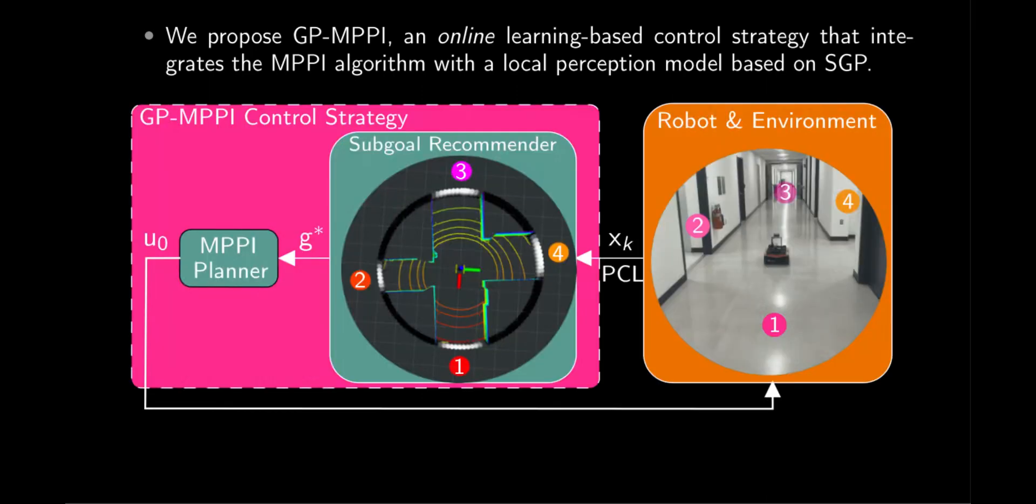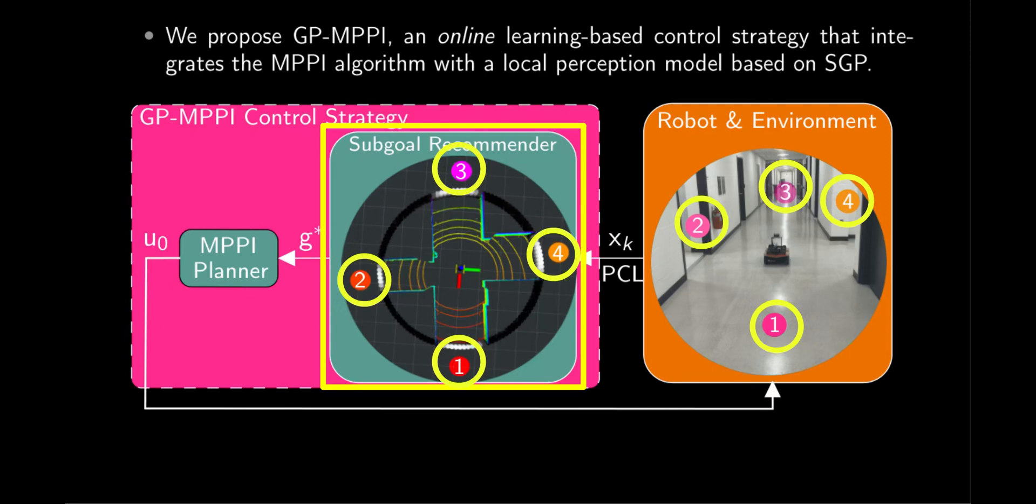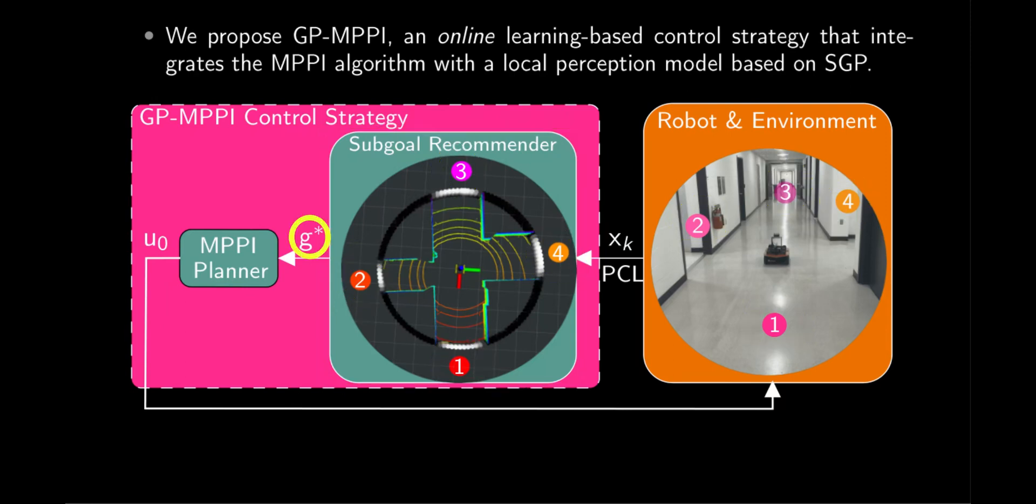The key idea is to utilize SGP's learning capability to construct an uncertainty surface, allowing the robot to learn about its surrounding navigable space, identify suggested subgoals, and recommend the optimal subgoal, G*, for the MPPI planner.